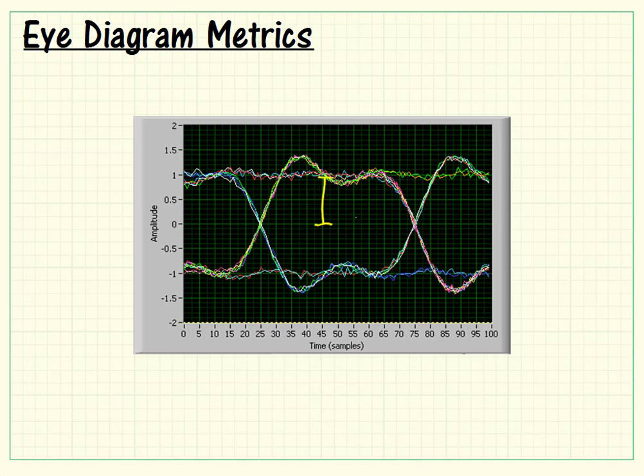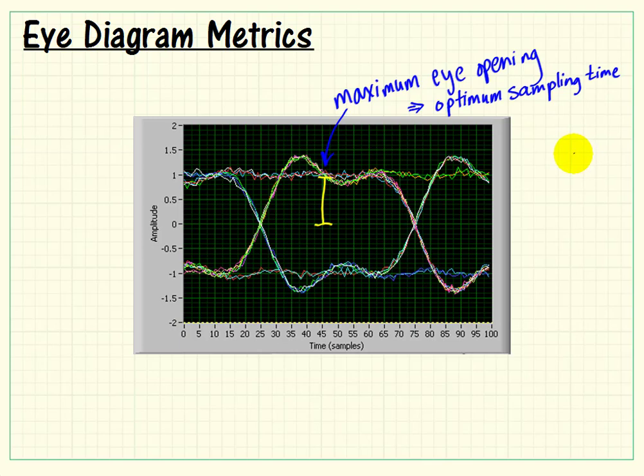So, for example, one of the things we'd like to be able to identify is the maximum eye opening. And that tells us the optimum sampling time.